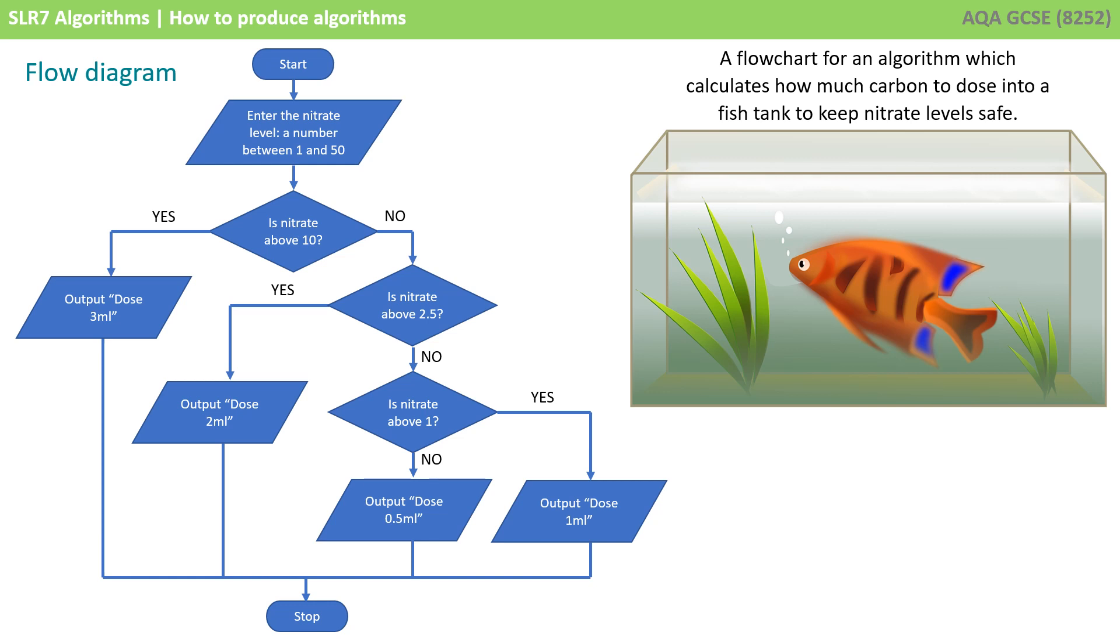Here's another example of a flow diagram. Now, this algorithm calculates how much carbon to dose into a fish tank to keep nitrates at bay. It starts by asking what the nitrate level is. And says, if the nitrate is above 10, then output 3 mil.